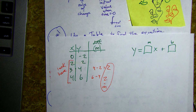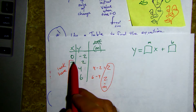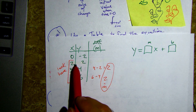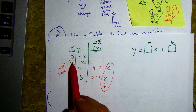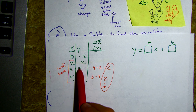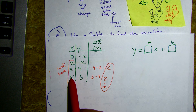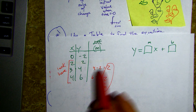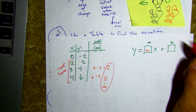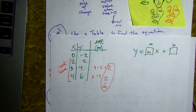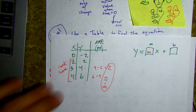It's always important to look for the numbers that are sequential, because that's telling me: go up one for x, go up two for y. Go up one for x, go up two for y — that's our slope.